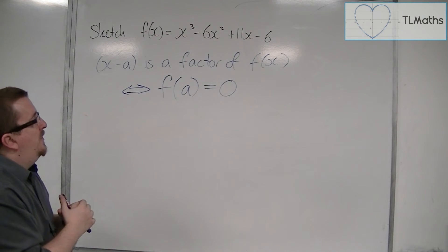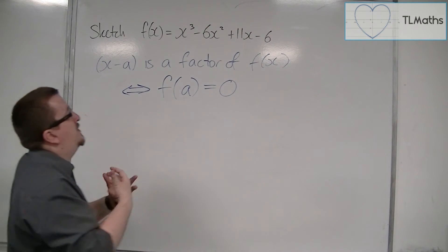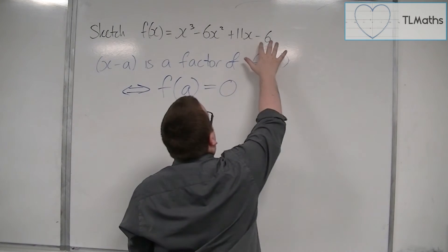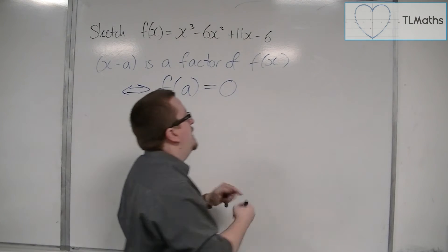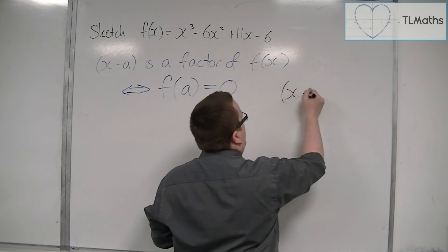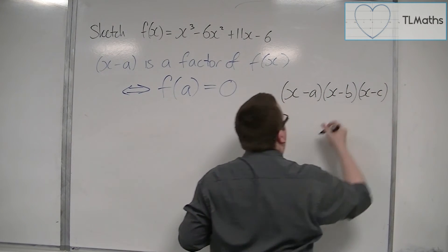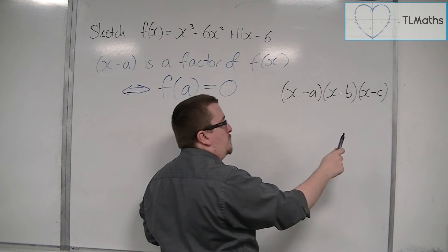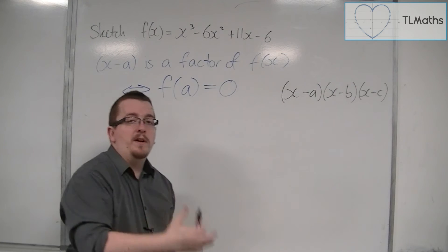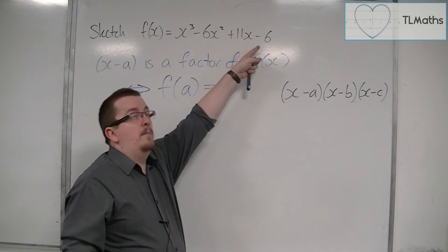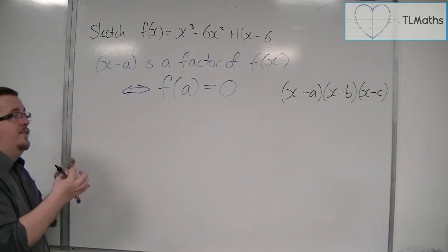It makes sense to choose numbers that are factors of -6. Because if I get three brackets and expand them, the constants -a, -b, -c will multiply together to make that -6. So I'm not going to choose numbers that aren't factors of 6.